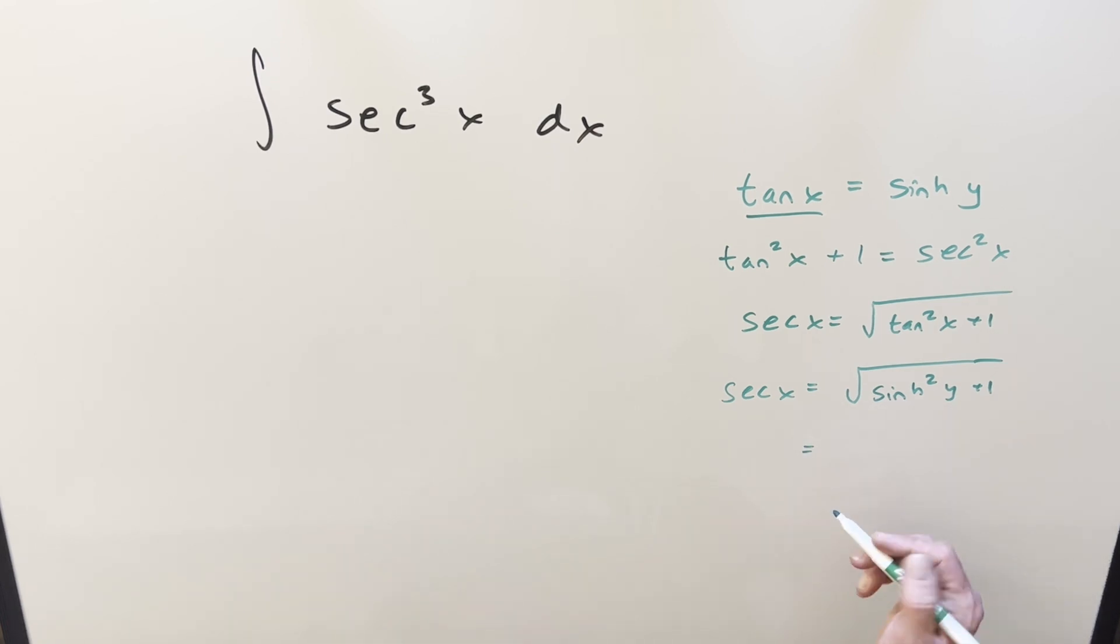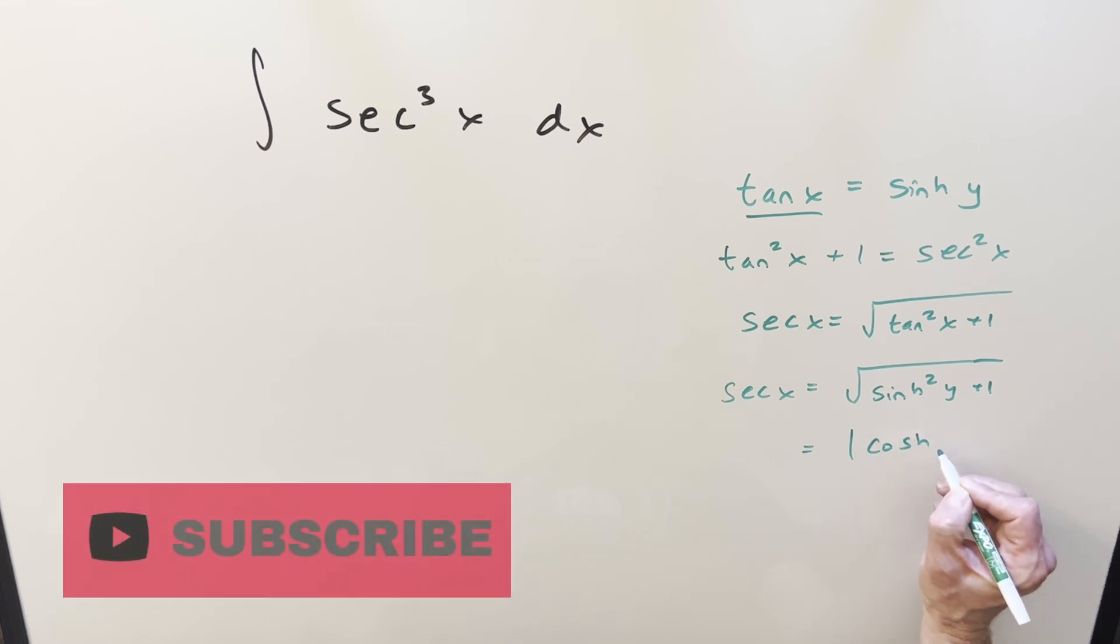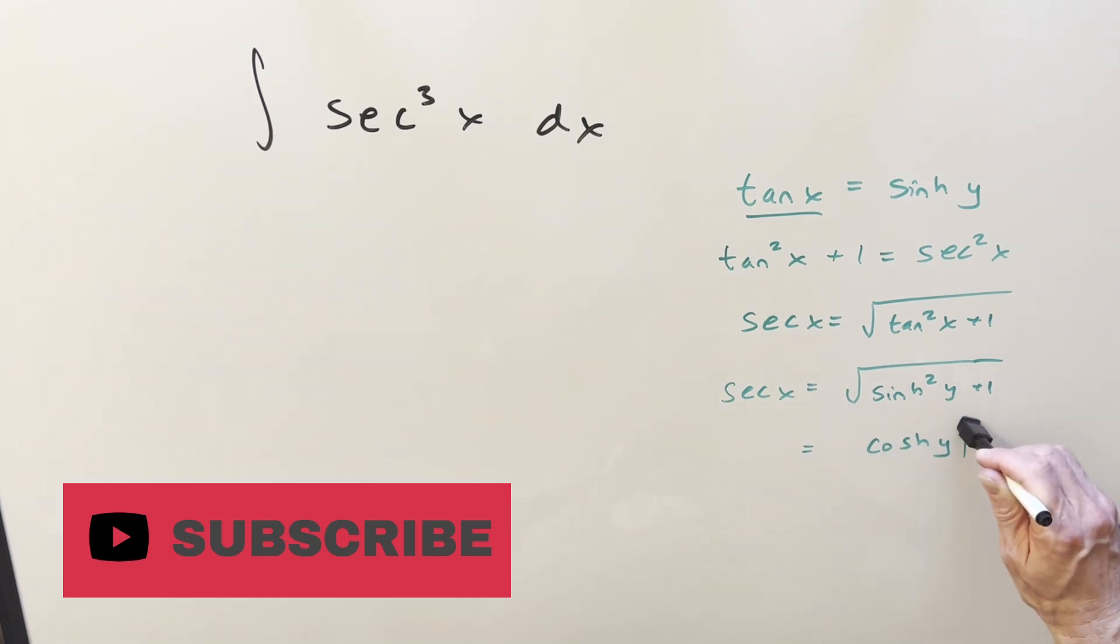But inside the square root, you could write it as absolute value of cosh y. But the thing about that is cosh is actually always positive, so we don't really need this. So we have this expression for secant x that we can use.